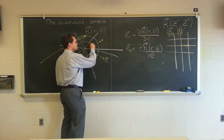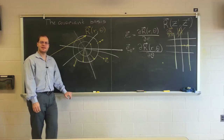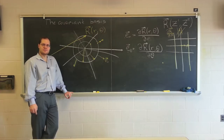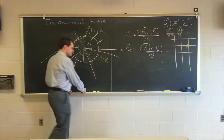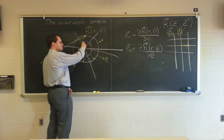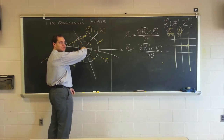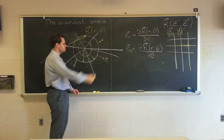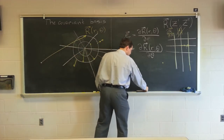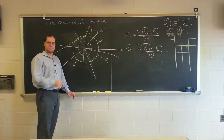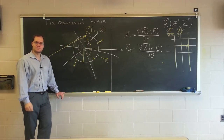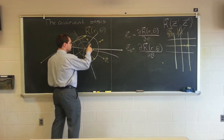Let's now evaluate e sub theta at this point. You should all realize that e sub theta is a problem you did on your last homework. E sub theta is the derivative of the position vector as it rotates around, parametrized by the angle. So the derivative will be the unit vector in the orthogonal direction — we're familiar with this derivative. We don't have to approach it from the limiting process again.